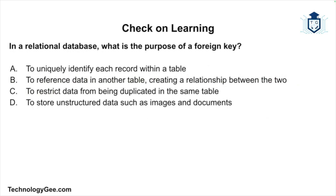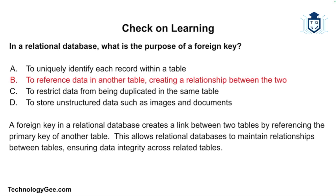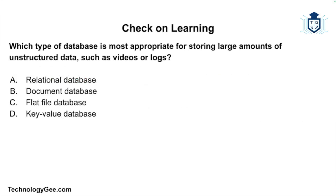Next question: In a relational database, what is the purpose of a foreign key? Is it to uniquely identify each record within a table? To reference data in another table, creating a relationship between the two? To restrict data from being duplicated in the same table? Or to store unstructured data such as images and documents? The correct answer is: to reference data in another table, creating a relationship between the two. A foreign key creates a link between two tables by referencing the primary key of another table, allowing relational databases to maintain relationships and ensuring data integrity across related tables.